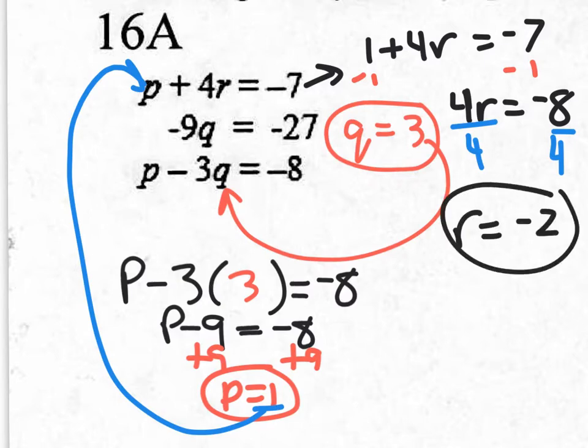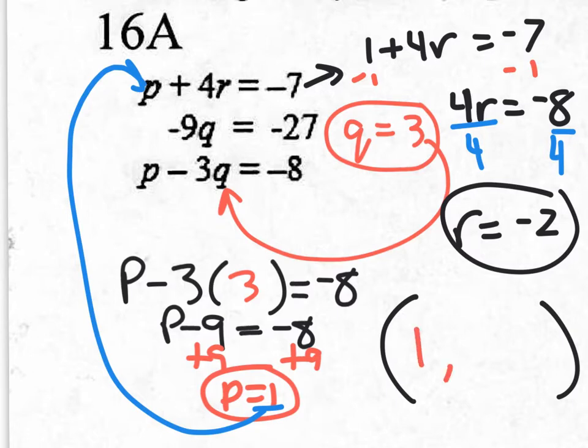So you have your three answers. If you look for the multiple choice answer on the final exam, it might be written as an ordered triple. You have to put them in alphabetical order: PQR. So it's 1 comma 3 comma negative 2. That's your ordered triple on 16A.